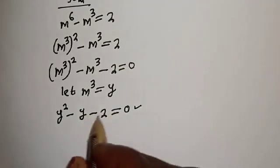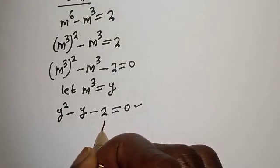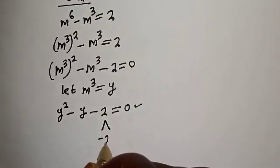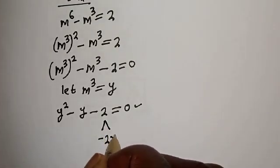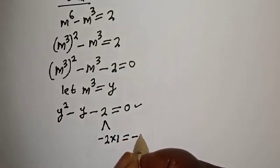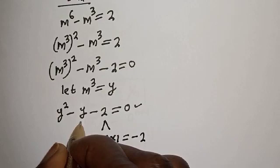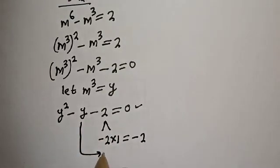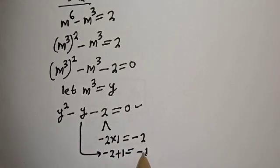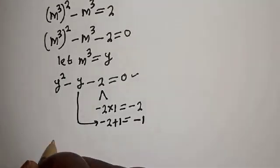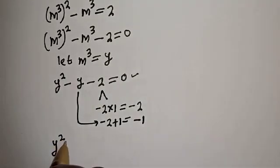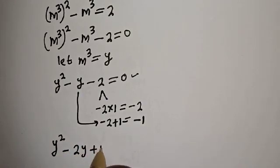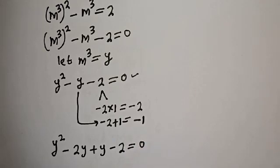Let's solve this using the factorization method. Here is the product: minus 2 multiplied by 1, which is equal to minus 2. Then the sum is minus 2 plus 1, which is equal to minus 1. Let's replace: y squared minus 2y plus y minus 2 is equal to 0.